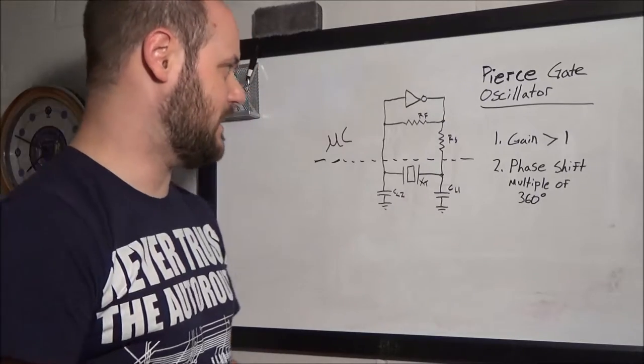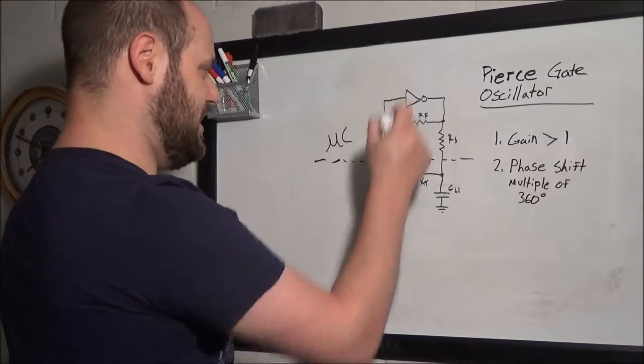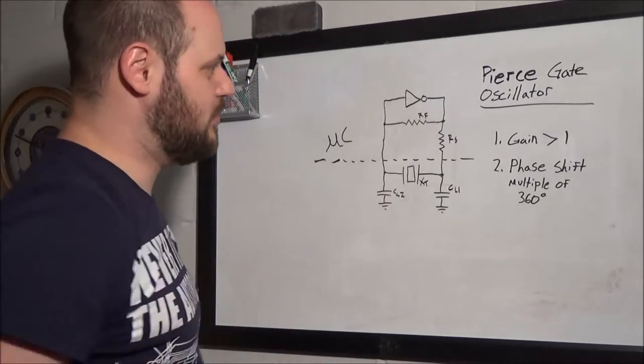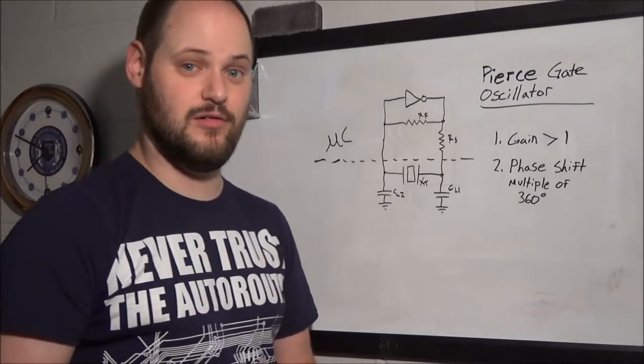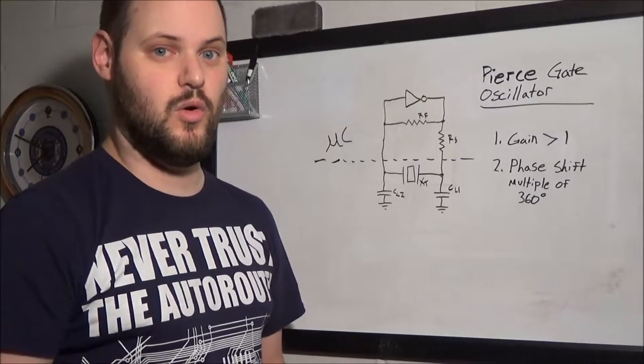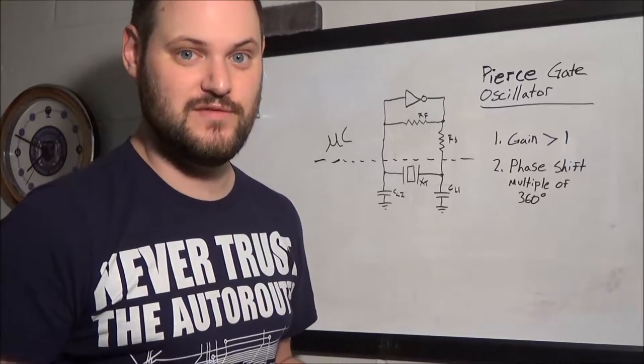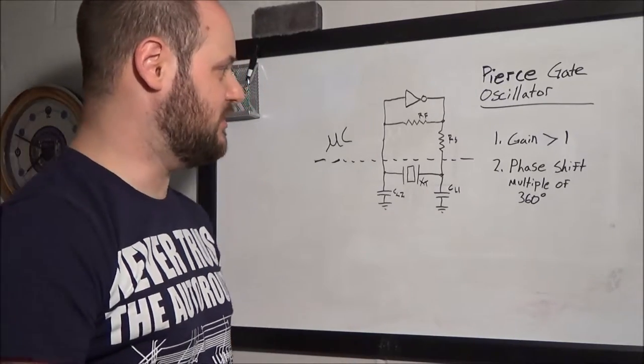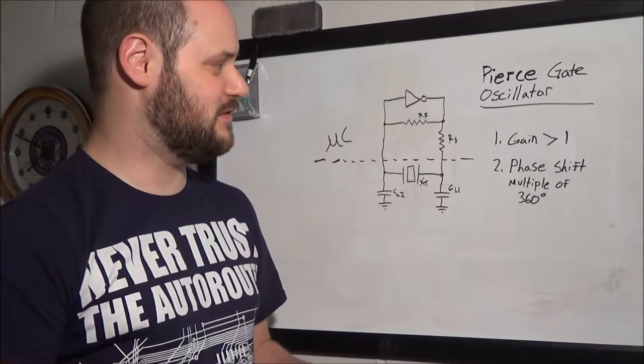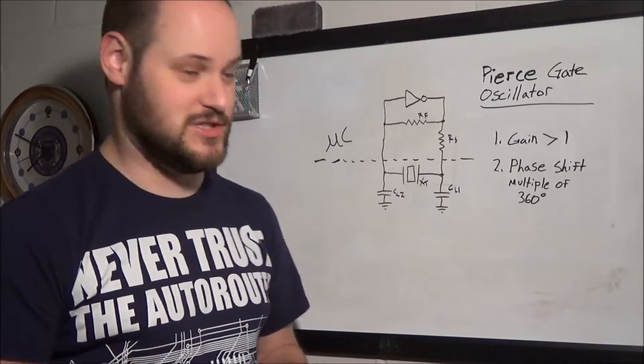Number two, the phase shift, that means between this gate here and the remainder of your components, needs to be either zero, no phase shift, or a multiple of 360, basically meaning no phase shift between any of the components. Because if you have, say, 180 degree phase shift,